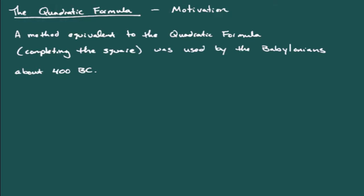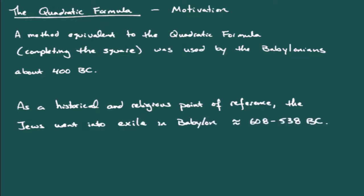Now, to give you a historical and religious point of reference for this, when we talk about the Jewish exile into Babylon, that's going to occur probably about 608 to 538 BC. And so, we're finding remnants about 400 BC for the quadratic formula, or something equivalent to the quadratic formula, and not much of a time discrepancy for when the Jews went into Babylon.